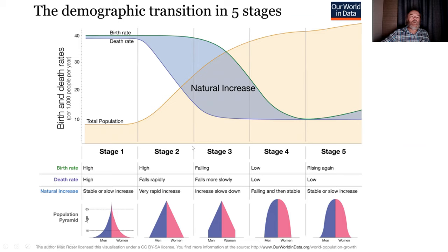What happens with population growth? There is a so-called demographic transition: first, population is steady because both death rates and birth rates are high; then, because of...